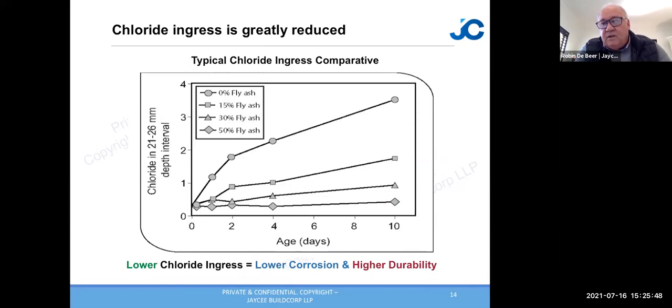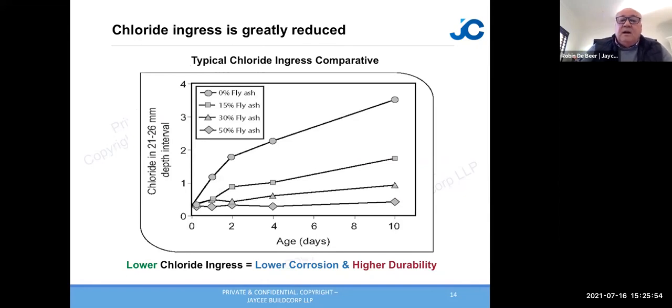For chloride ingress resistance, the more fly ash you put in, the better. At 50 percent replacement, you get a much lower chloride ingress than at 30 percent.